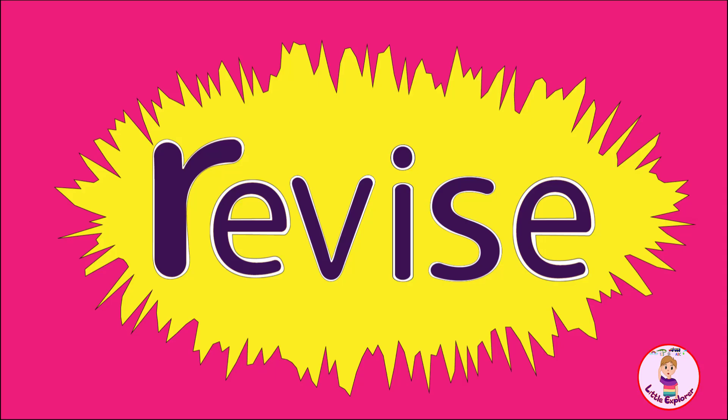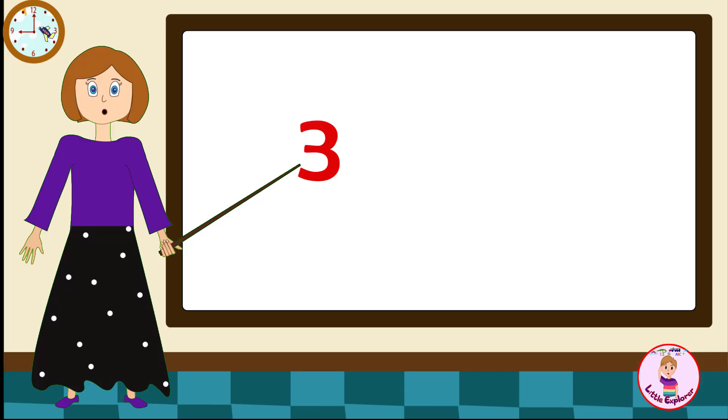Let's revise it one more time. Come on! Three ones are three. Three twos are six. Three threes are nine. Three fours are twelve.